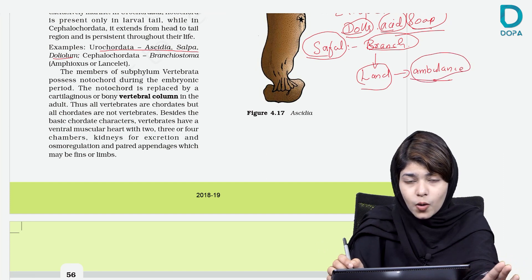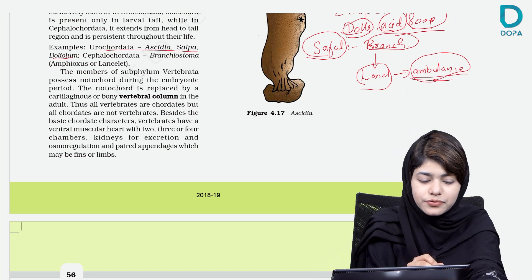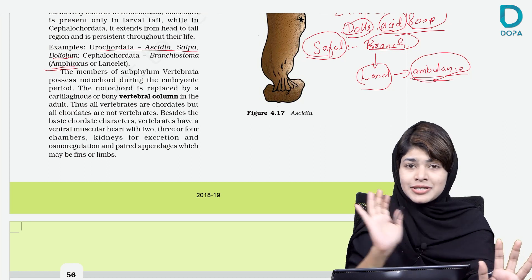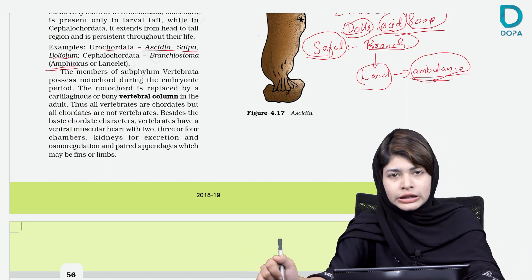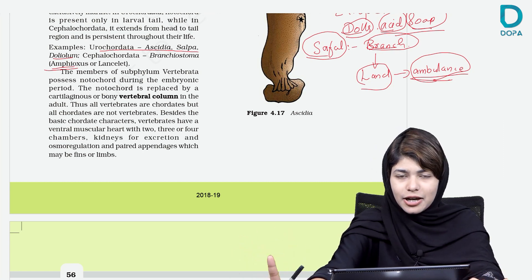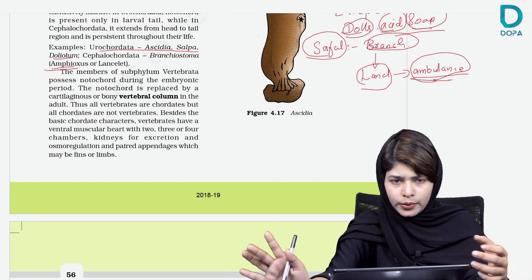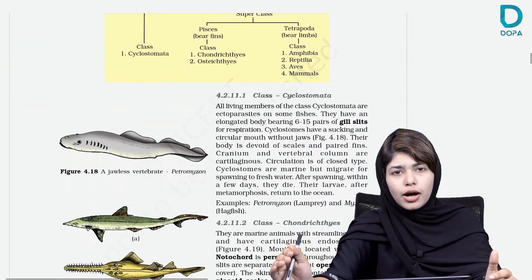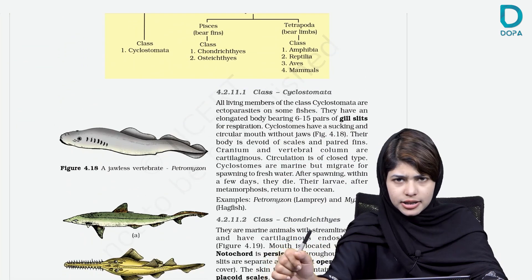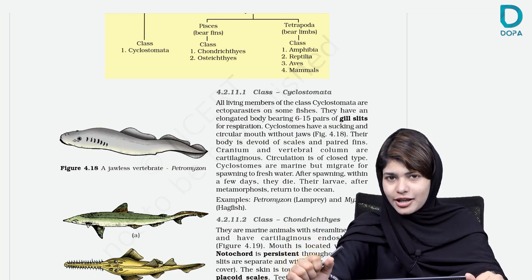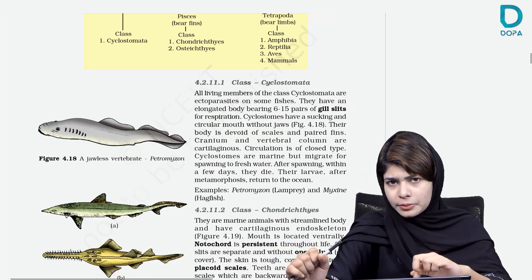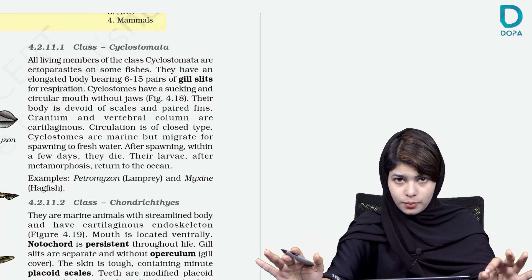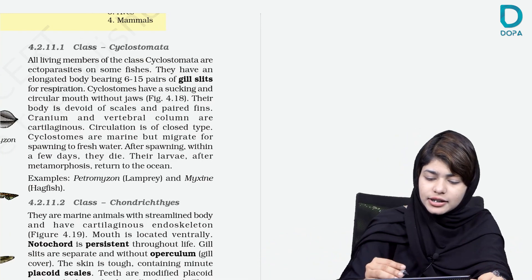Cephalochordata — Branchiostoma, lancelet, and amphioxus. These are settled. Vertebrate class — on one side we have cyclostomata.